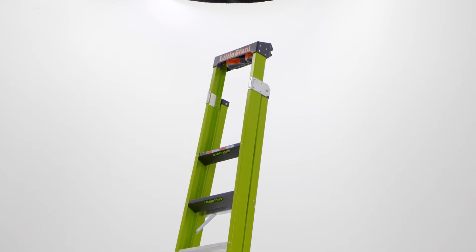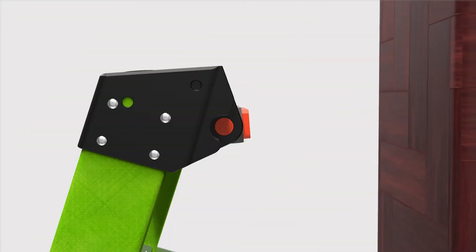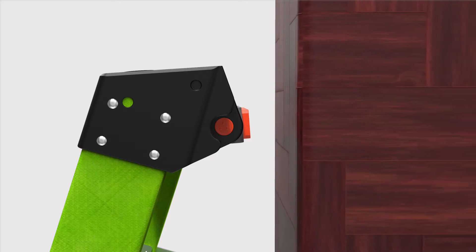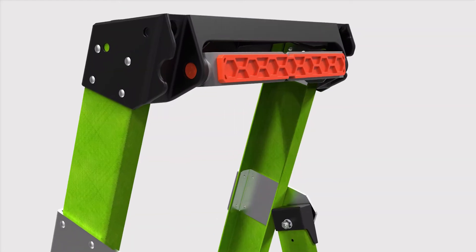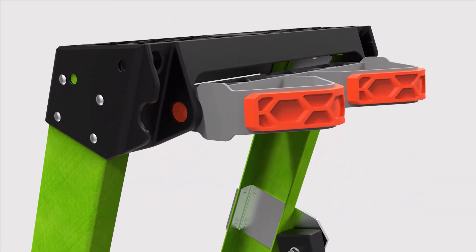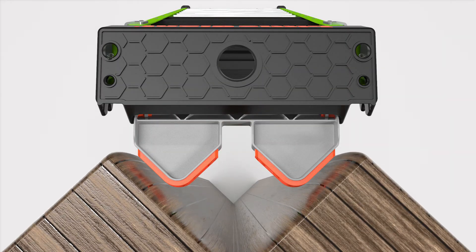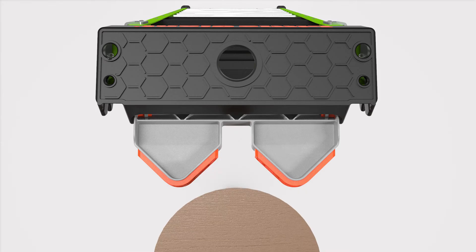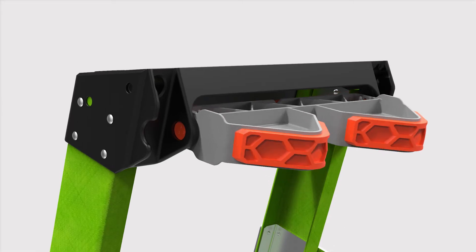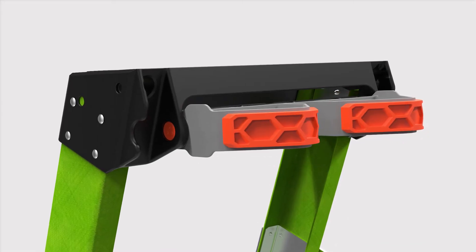At the top of the ladder, we have the rotating wall pad. That can be used in the flat position, leaning up against a flat wall, or you can rotate that around. That'll lock onto a stud, go onto an inside corner, outside corner, or a pole. That locks the ladder in place, gets you exactly where you need to be.